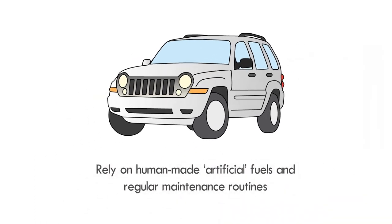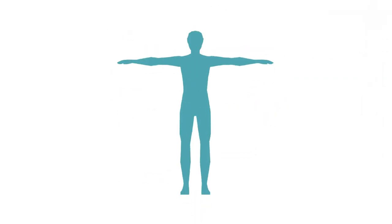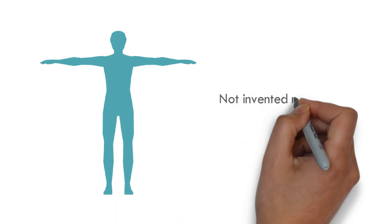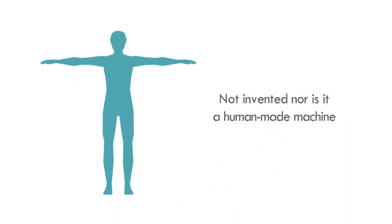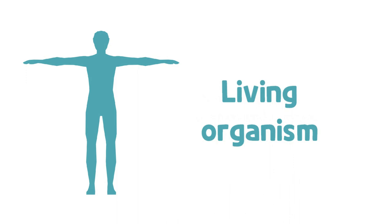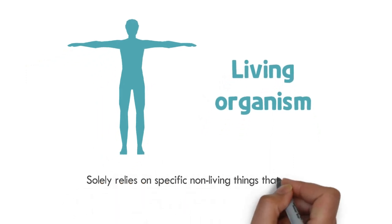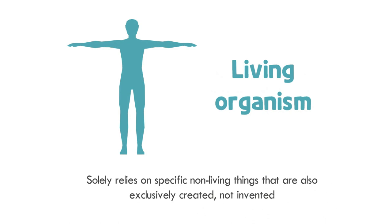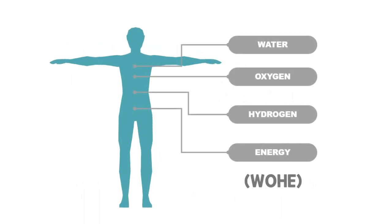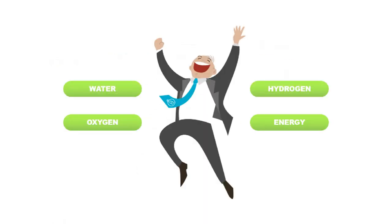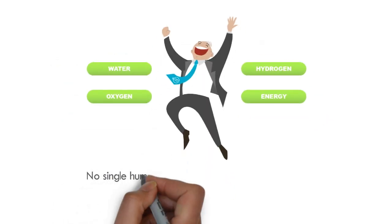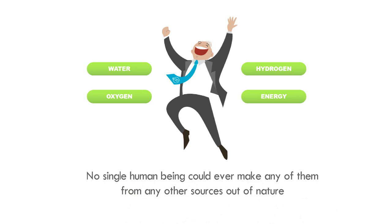The difference between a machine such as a vehicle and the human body is that vehicles or machines rely on human-made artificial fuels and regular maintenance routines to safeguard their function appropriately, whereas the human body, which represents a system, is not invented nor is it a human-made machine. Rather, it is a living organism exclusively created in such a way that it solely relies on specific non-living things that are also exclusively created and not invented.